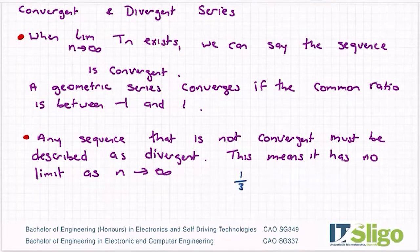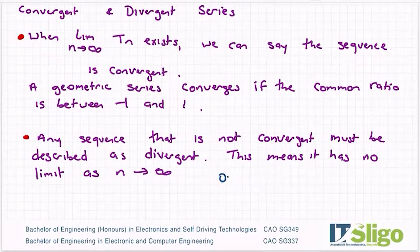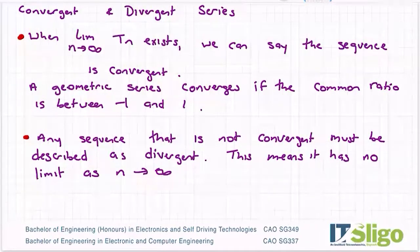Whereas if we look at a third, well, let me write it as decimal first. If we look at the sequence 0.3, 0.33, 0.333, and so on, so forth, does that converge towards a value? Yes, it does. It converges towards a third. So when the limit exists, we say the sequence is convergent.